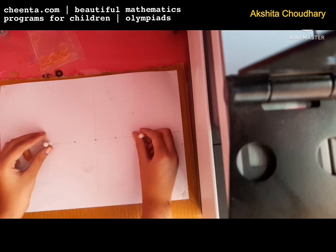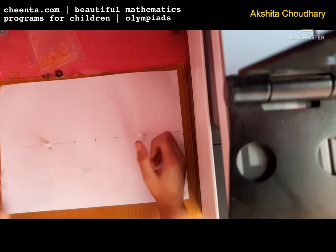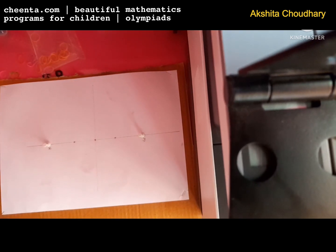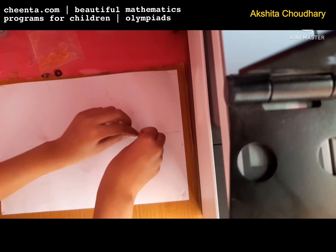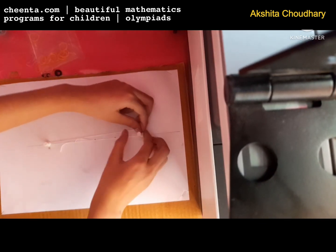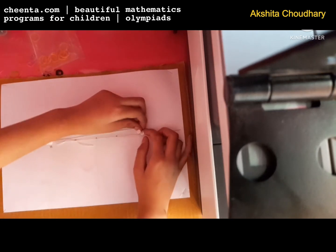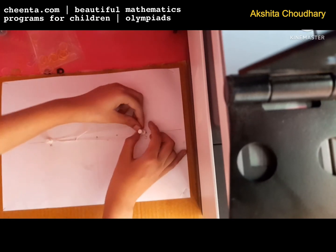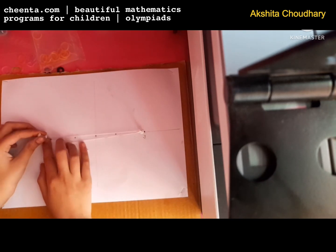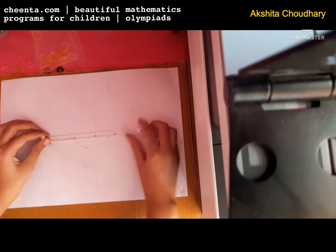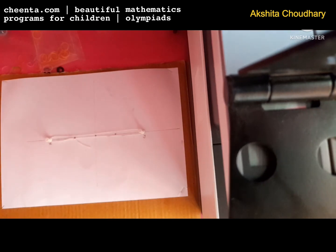Place these two board pins. Now take the string, put it around, and tie a knot. Once you're done, your compass is ready. Let's test it.